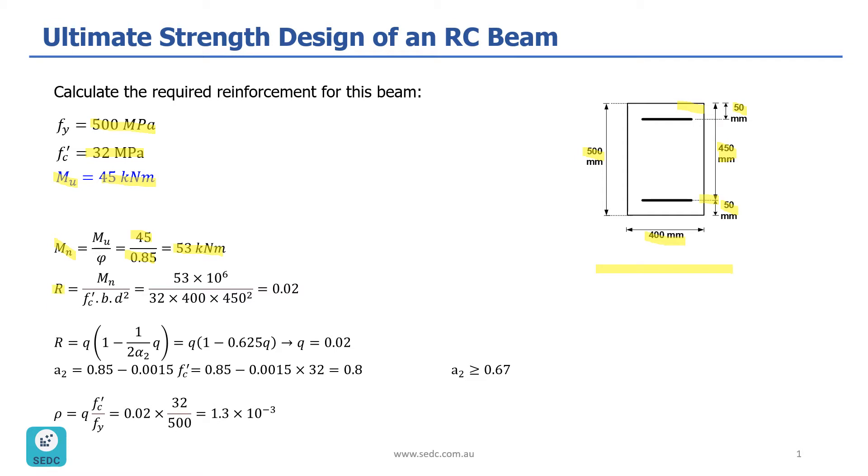The next step was calculating R, which is equal to Mn, which is 53 times 10 to the power of 6, because it's kilonewton meter, divided by F prime C, which is 32 MPa, and B is 400, and D is 450 millimeter. So, R would be 0.02.